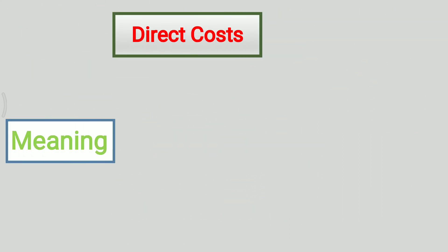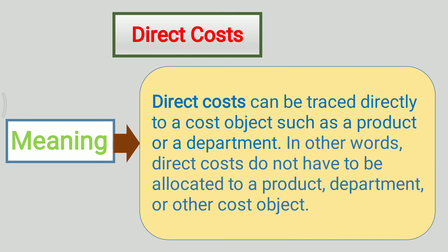We will see the meaning of direct cost. Direct cost can be traced directly to a cost object such as a product or a department. In other words, direct costs do not have to be allocated to a product, department, or other cost object. This is the concept of direct cost. Thank you.